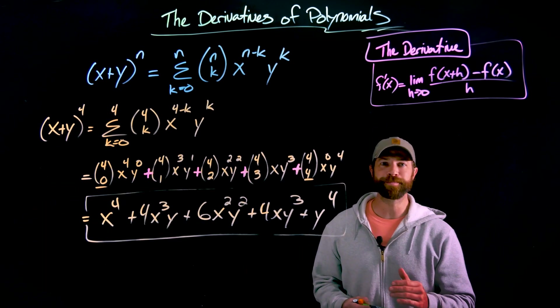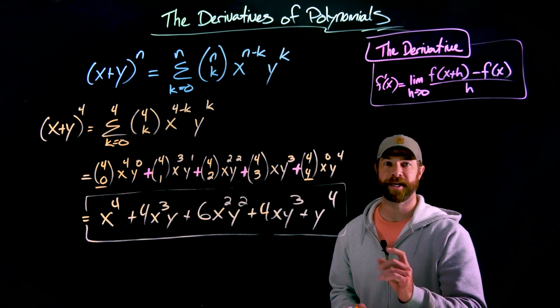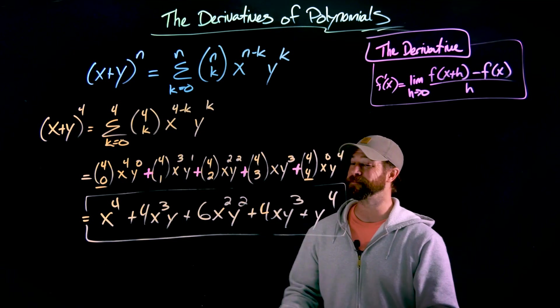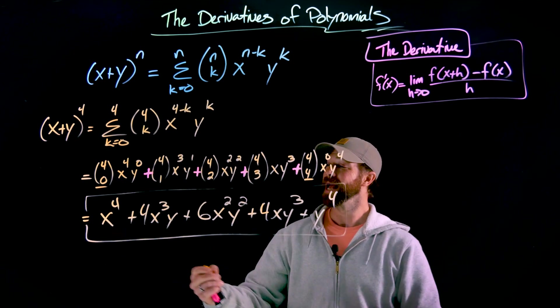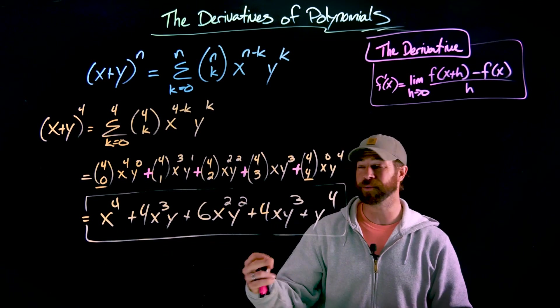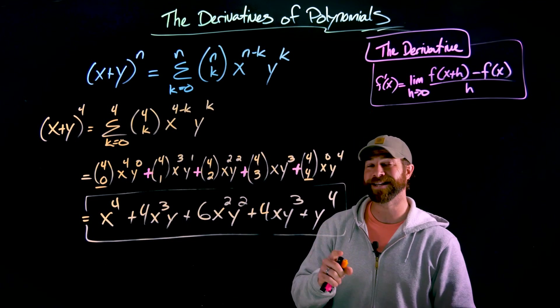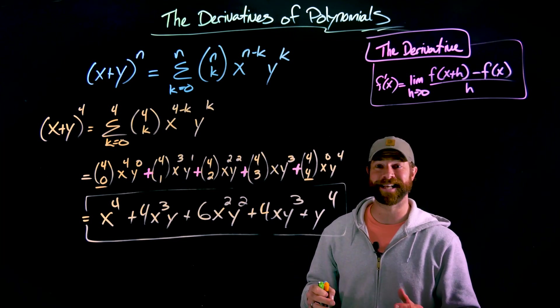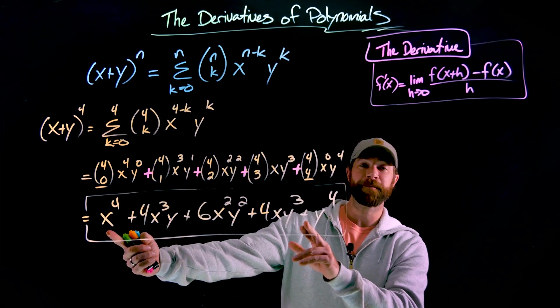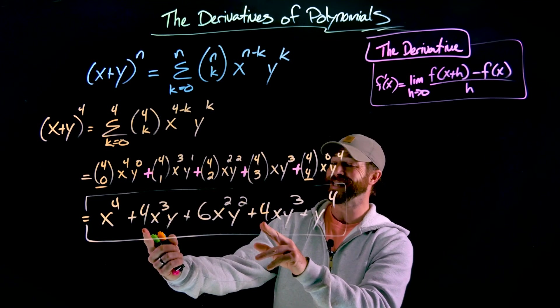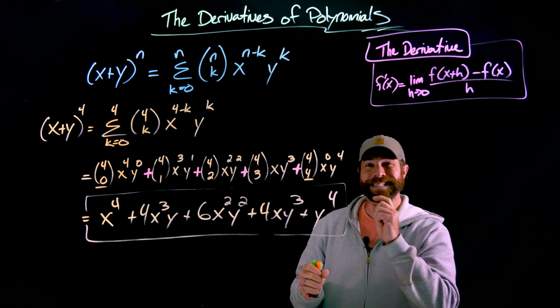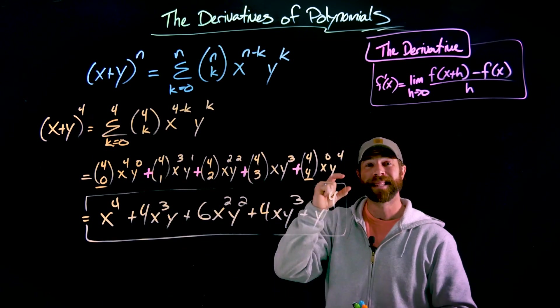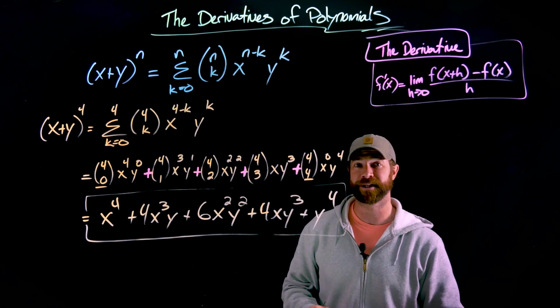A couple really important features about this binomial expansion right here. First and foremost is that every term has an x and y in it except for these last terms right here. And as you progress from left to right, we lose a number of x's and gain a number of y's. Second are the coefficients that we have on the ends. On the ends, we have a coefficient of 1. When we take one step in, the next coefficient is the n value that we had as this exponent right here. Every single time, that will result in the coefficient of that term.